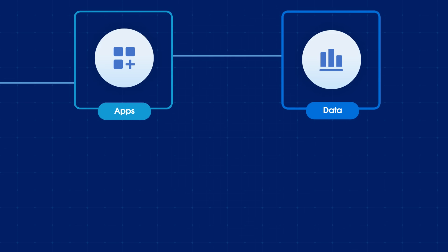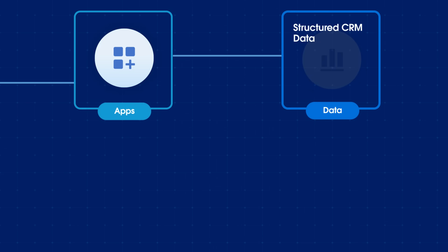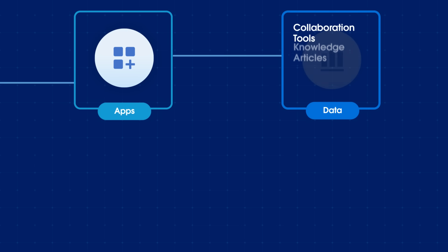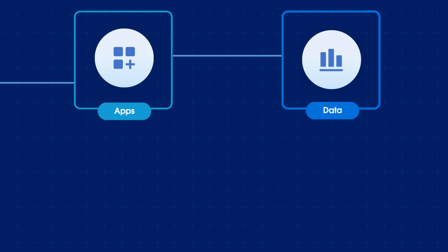Next, you need your data. We're talking about a unified data architecture. This isn't just your structured CRM data. It's also the unstructured gold from collaboration tools, knowledge articles, and external data lakes. You need to unify, harmonize, and activate all this data to give your AI the right context.